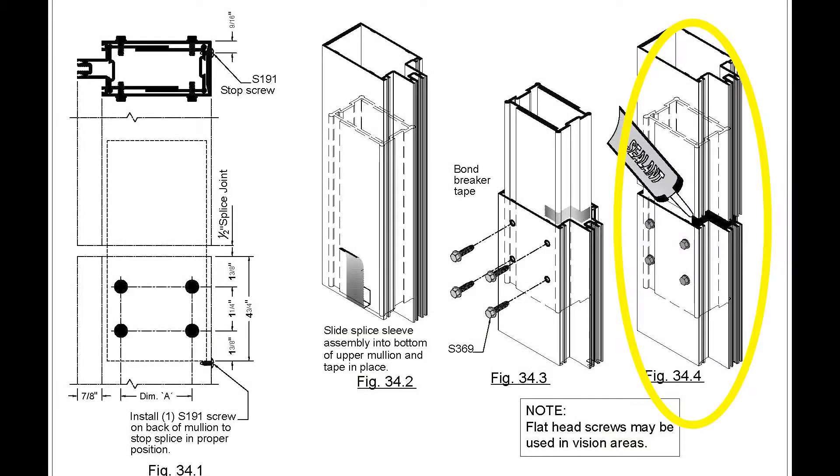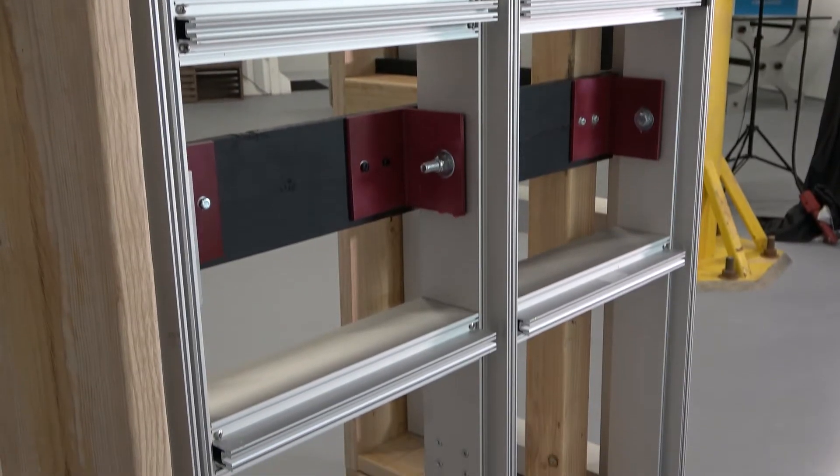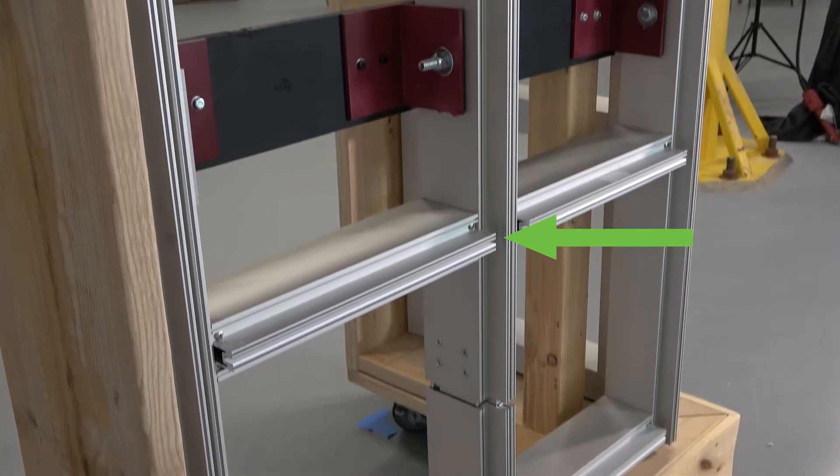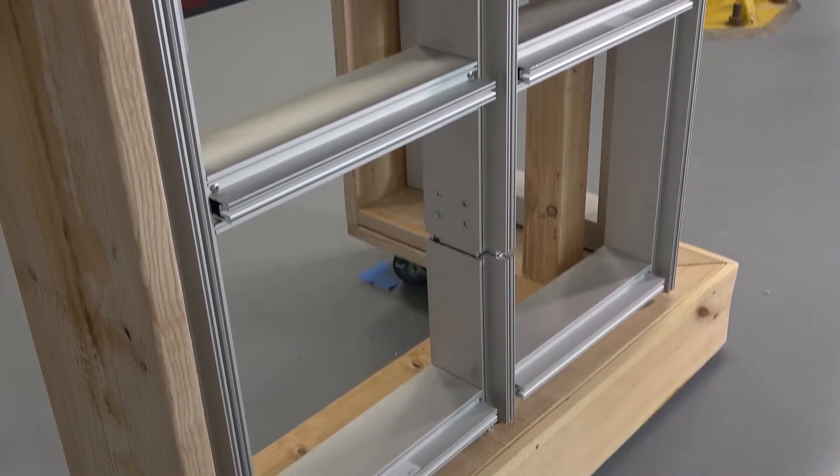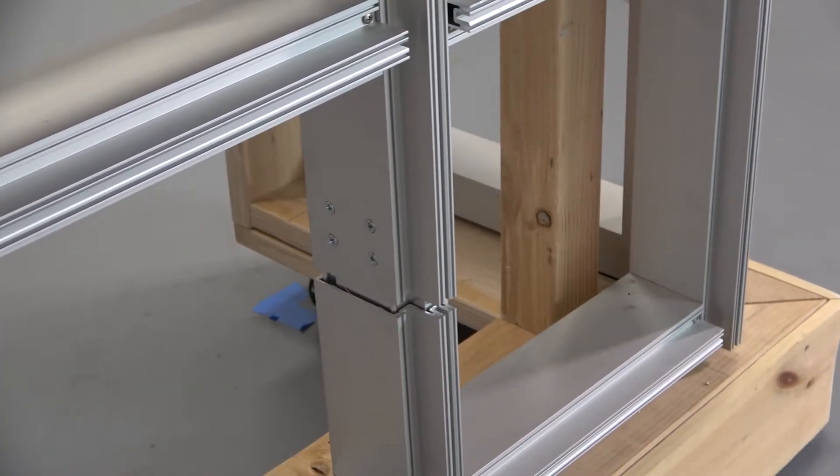As you can see here, the splice is attached to just one of the two mullions. Once this mullion is secured to the structure, the other mullion will be free to travel up and down as much as it needs, absorbing the building's movement.